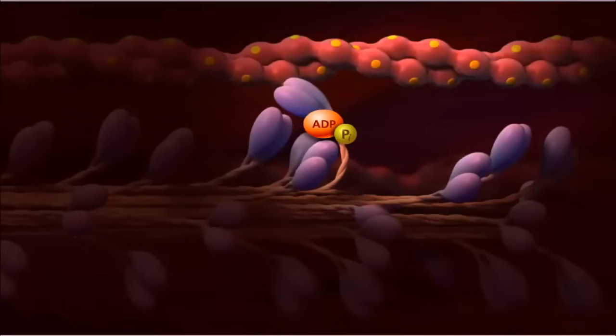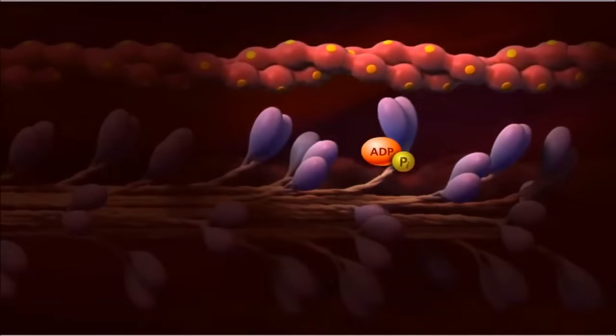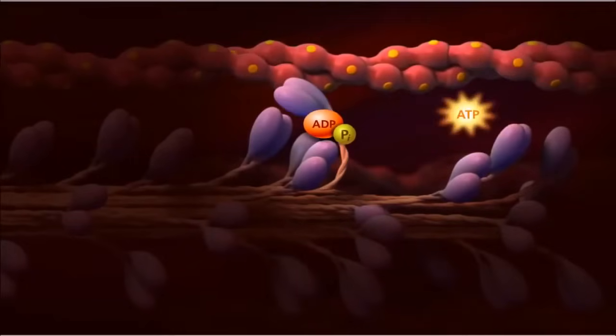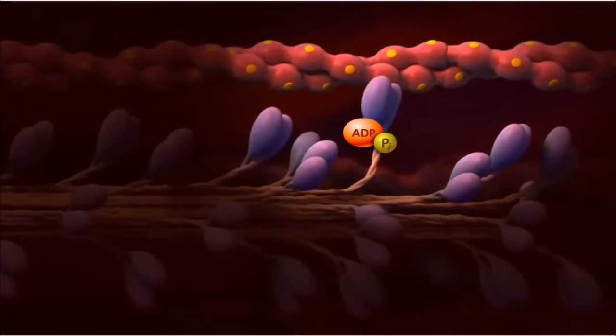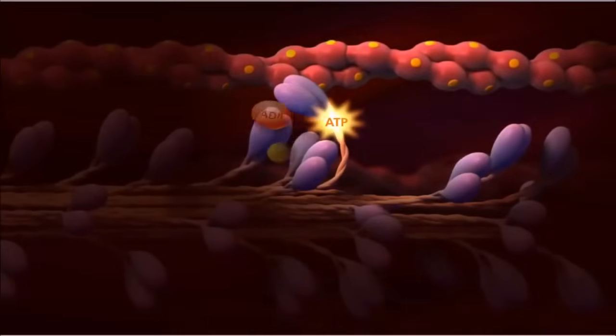ADP and inorganic phosphate are released during the power stroke. The myosin remains attached to actin until a new molecule of ATP binds, freeing the myosin to either go through another cycle of binding and more contraction or remain unattached to allow the muscle to relax.